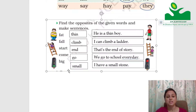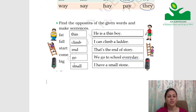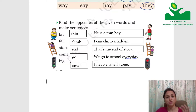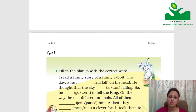The next word is start and the opposite is end. Sentence: That's the end of the story. Come — opposite is go. Sentence: We go to school every day. Big — opposite is small. Sentence: I have a small stone. These are just sample sentences for your reference; you can make your own.